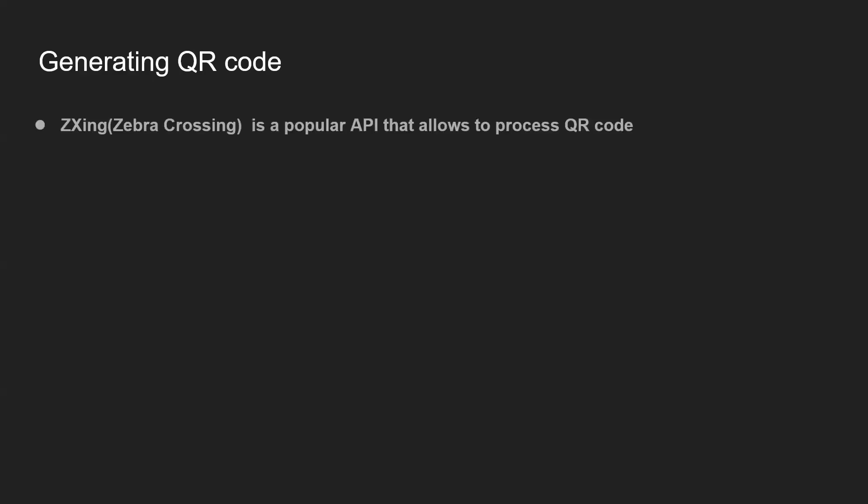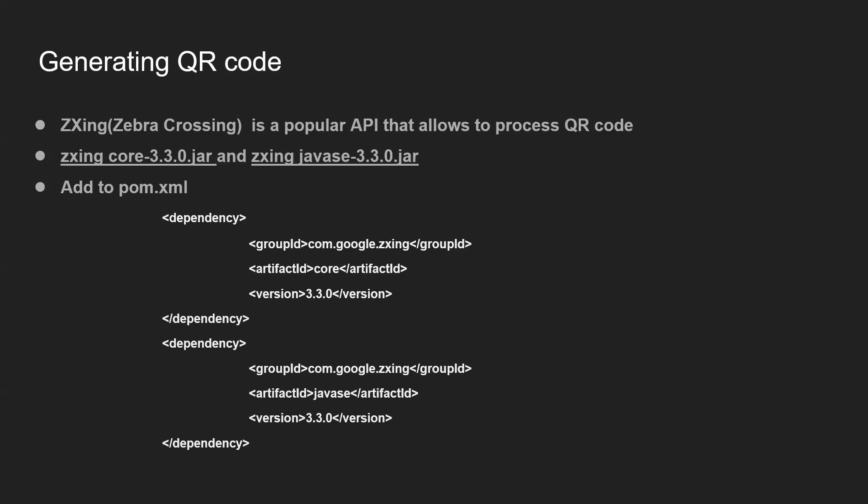Now let's see how to generate the QR code. We are going to use a third-party Java library called ZXing (Zebra Crossing), which is a popular API that allows processing of QR codes. If you are using a Java project, you need to add two jars: zxing-core and zxing-javase. Links are provided in the description. If you are using a Maven project, add these two dependencies to your pom.xml and you are ready to write the code.